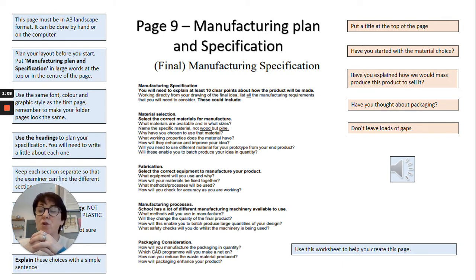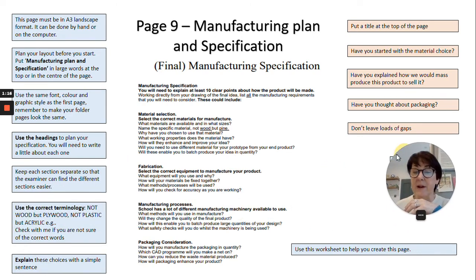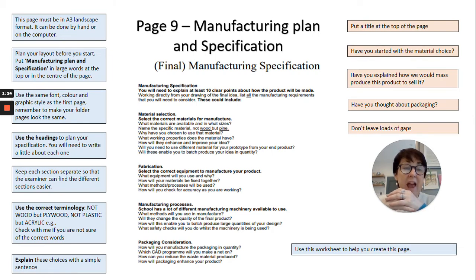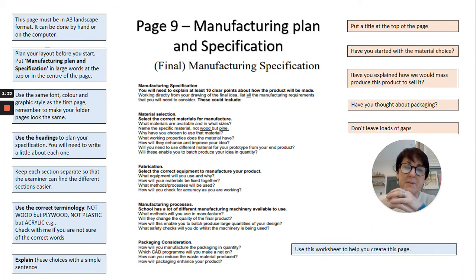First of all you need to think about the layout. How are you going to lay out this A3 sheet of paper? Where's best to put the things that you need to write about? Use the same format that you've used for your folder before and use the same font. Use these headings to break down the page to make it easy to read. Be specific — if you're talking about material, be very specific about the type of material you're going to use. Don't just say wood — what sort of wood in particular do you want to manufacture your product from?